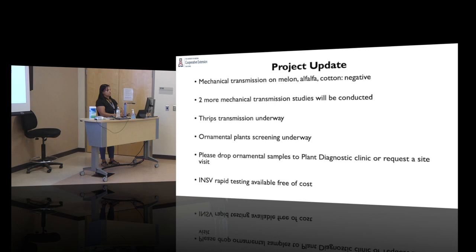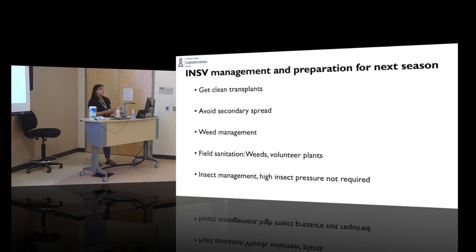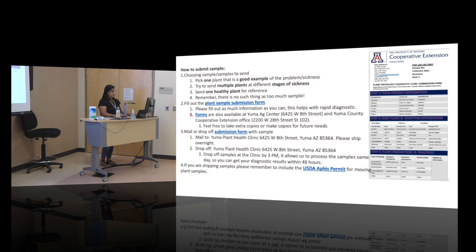Key management recommendations: always start with clean transplants, as secondary spread from initial low incidence is a known pattern. Field sanitation and insect management are critical, since high insect pressure is not required for efficient transmission — even a few thrips can transmit the virus effectively. To submit samples to the plant pathology lab, search for the diagnostic clinic online, download the submission form, and make copies as needed. Out-of-state senders from California need to include a permit, which can also be downloaded or requested by email.